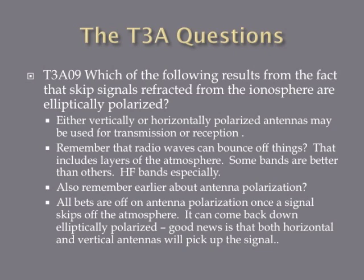Which of the following results from the fact that skip signals refracted from the ionosphere are elliptically polarized? The answer is: either vertically or horizontally polarized antennas may be used for transmission or reception. Radio waves bounce off the ionosphere — great for long distance HF communication. A vertical antenna produces a vertically polarized signal; a horizontal dipole produces a horizontally polarized signal. However, when a signal bounces off the ionosphere, its polarization becomes elliptically polarized, meaning it can be picked up equally well by either a vertical or horizontal antenna.